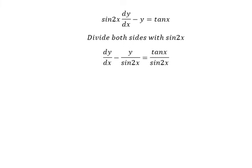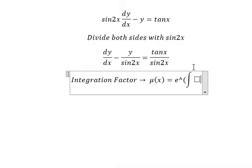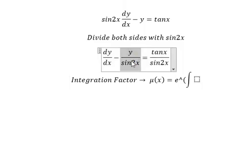Next we need to use the integration factor, so I will call this μ(x). So we have e to the power of the integral, and we have negative one over sin2x in here.